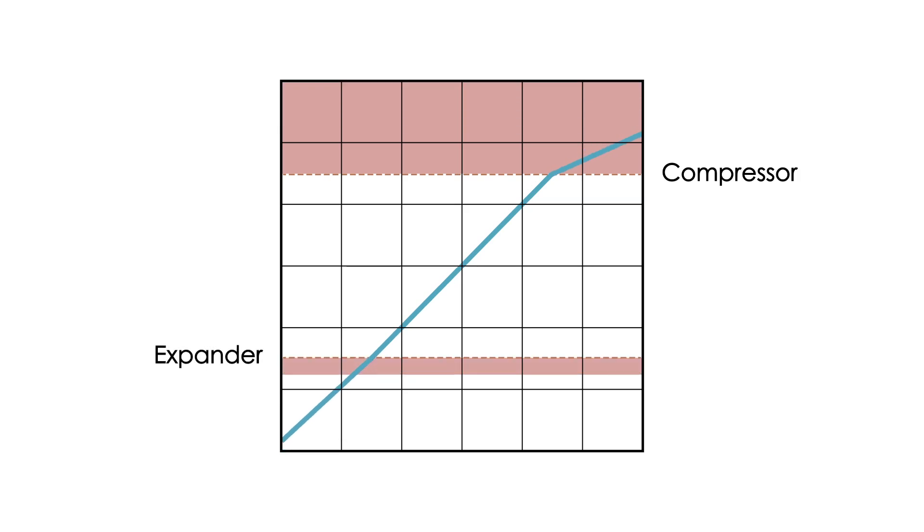In an expander the signal is compressed when it falls below the threshold. It remains unaffected when the signal is above the threshold.